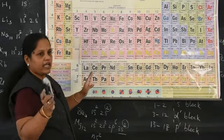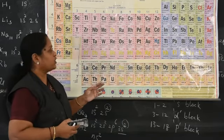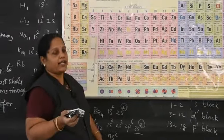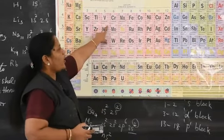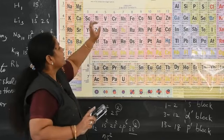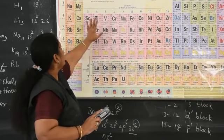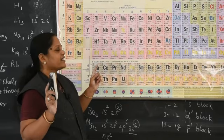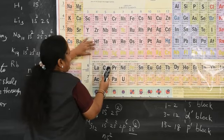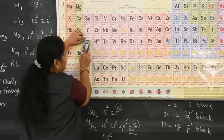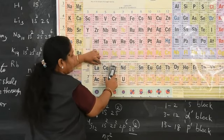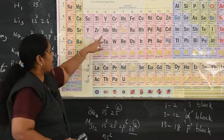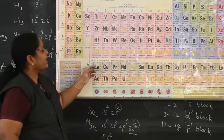Why are F block elements called inner transition elements? Because they form a series in between the D block. Starting from atomic number 57 (lanthanum), after that atomic numbers 58 to 71 are F block elements placed within the D block range. That is why these are called inner transition elements.